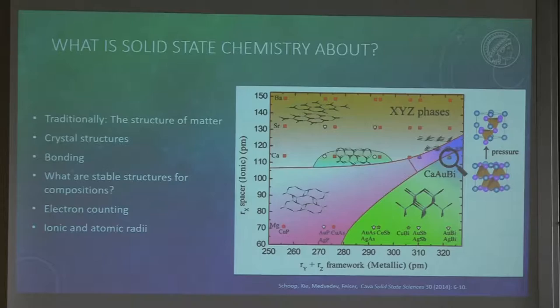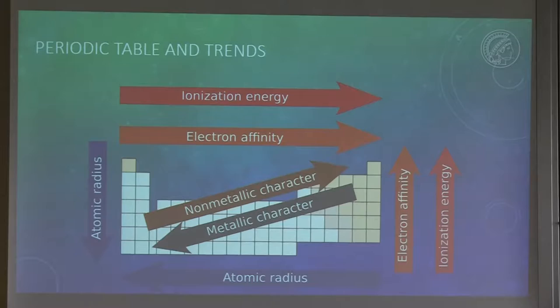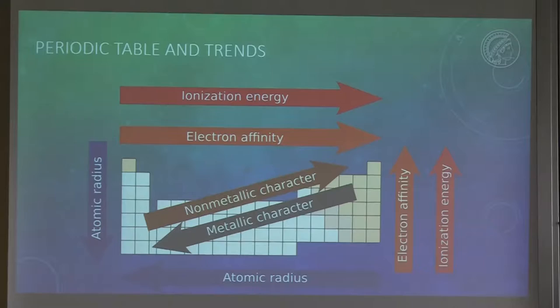You can see that certain regions within this diagram correspond to where a certain structure type is stable. The ratio of different radii is very important for defining a certain crystal structure. When we think about ionic or atomic radii, trends in the periodic table are very useful. Atomic radii increase going down and to the left in the periodic table. Another important trend is electronegativity, because the difference in electronegativity gives you an idea of how ionic a compound is going to be, or how more metallic the bonding will be.